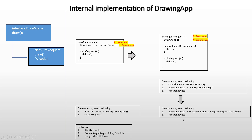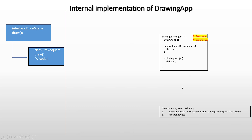So as far as code changes are concerned, we do not need to modify anything. This code looks very clean, is not tightly coupled, and we don't break the single responsibility principle because we are not instantiating objects ourselves — we have delegated that responsibility to Google Guice. This is also good for unit testing because we are no longer using the new keyword to instantiate objects. Finally, we take the help of Google Guice to instantiate SquareRequest, which internally injects DrawShape, and we can make a call to makeRequest. In further videos we are going to write the code to implement this drawing app.